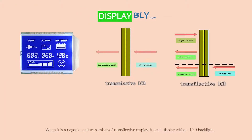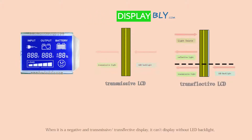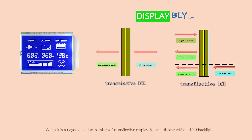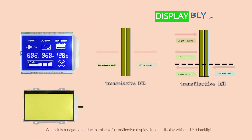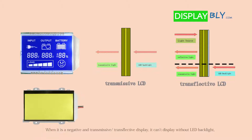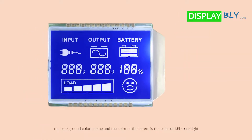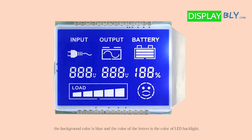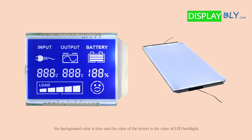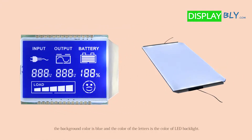When it is a negative and transmissive or transflective display, it cannot display without LED backlight. The background color is blue, and the color of the letters is the color of the LED backlight.